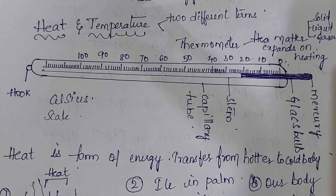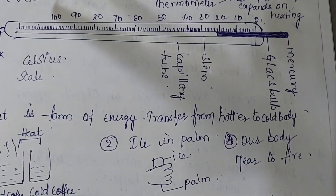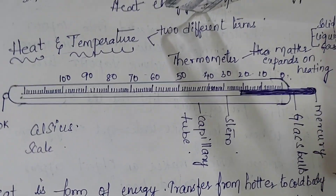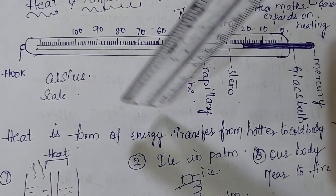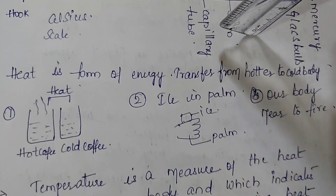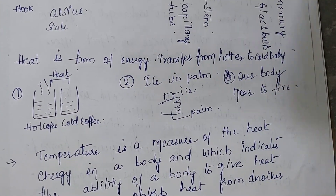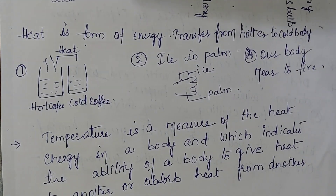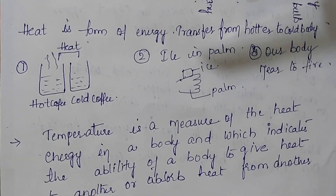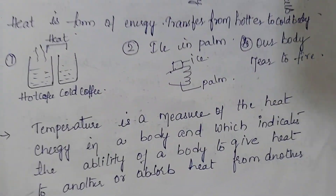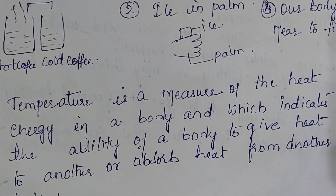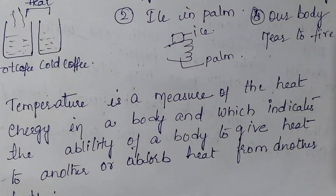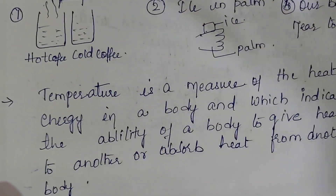Heat and temperature — are these two the same or different terms? We always think that more heat means higher temperature. Let us see. Heat is a form of energy transferred from a hotter body to a colder body. Energy is always converted from one form to another — according to the law of conservation of energy, energy is neither created nor destroyed; it is converted from one form to another. Like water flows from higher to lower level, heat will also move from a hotter body to a cooler body.